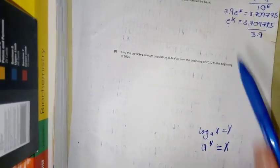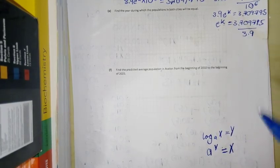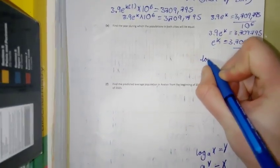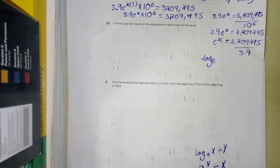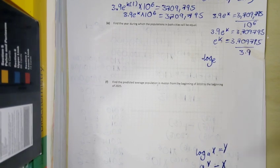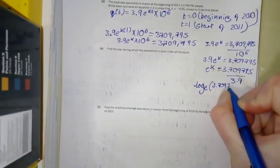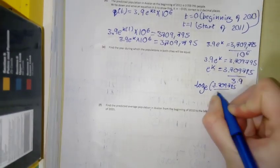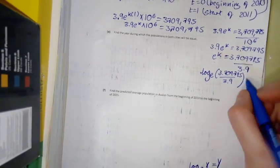So in this case, we're starting off, our A is equal to e, our Y is equal to K, and our X is equal to this. So it's going to be log of e, and then what goes next is our X, so this bit here, 3.709795 over 3.9, and that's all going to be equal to K.